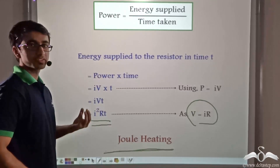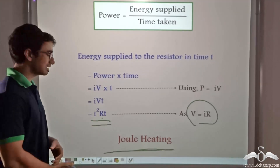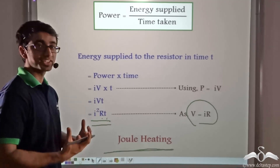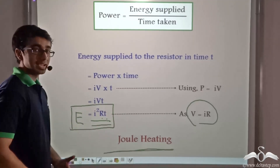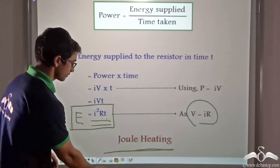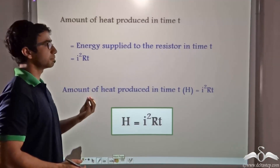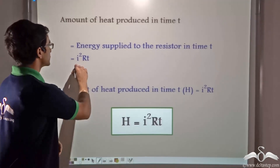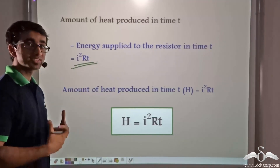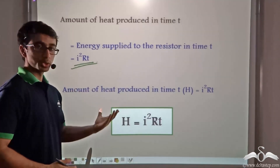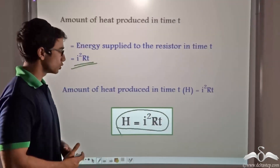The resistance of the fan is R, the current passing through the fan is I, and it is used for time T seconds. Under these circumstances, the heat energy dissipated by the fan is given by H = I²RT, and this effect is known as Joule heating. So the amount of heat produced in time T equals the energy supplied to the resistor in time T, which is I²RT.